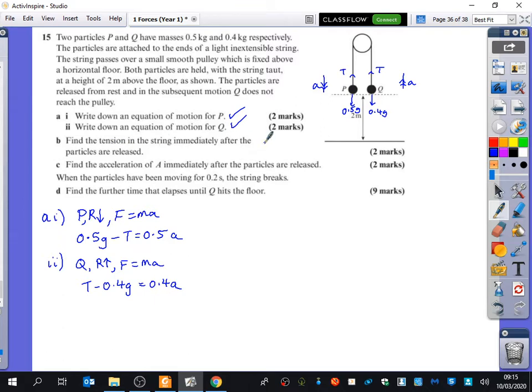Now it wants us to find the tension in the string and then the acceleration of the particles. So what do you think part B and C is asking for us to do? Simultaneous equations. So I've got equation 1 here and equation 2 here. So for part B, it doesn't matter if we do these in a different order to each other. We could find out the acceleration first and then find out the tension. So I'm actually going to do part B and I'm going to do part C at the same time. That's absolutely fine to do.